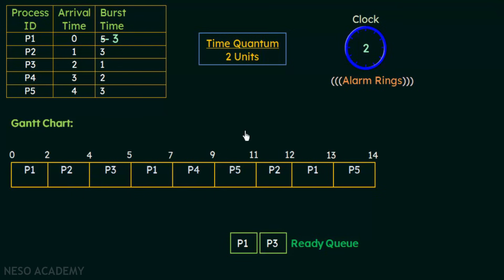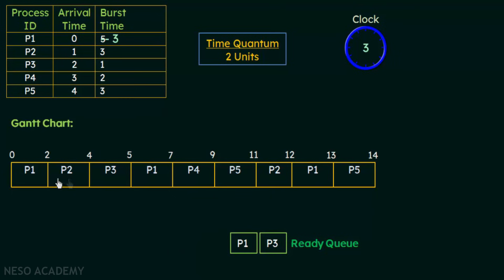At time 3, P2 is still executing — it is allowed to run from time 2 to time 4. Looking at the table, we see that P4 has arrived at time 3. Since P2 has not completed its time quantum, the Gantt chart cannot be disturbed, so P4 is placed at the tail of the ready queue.